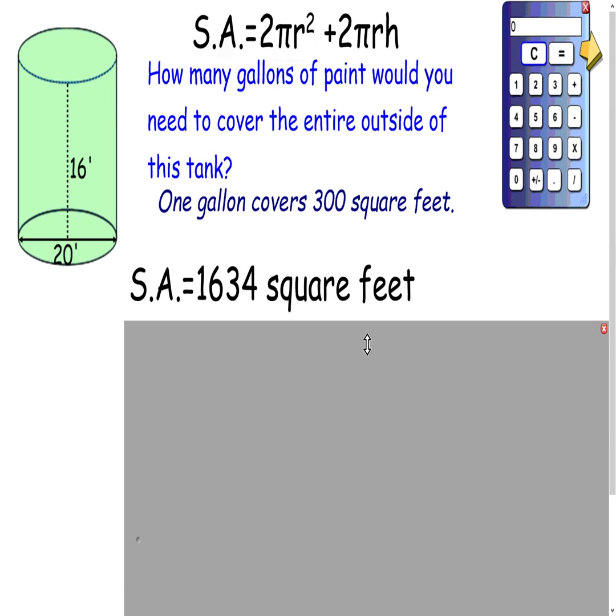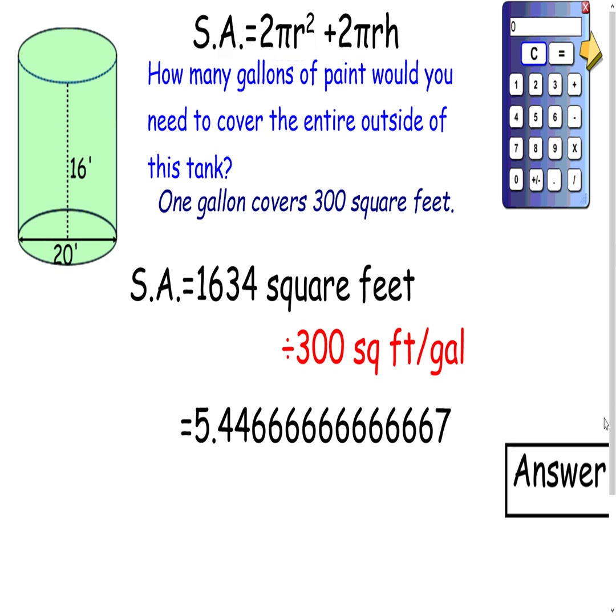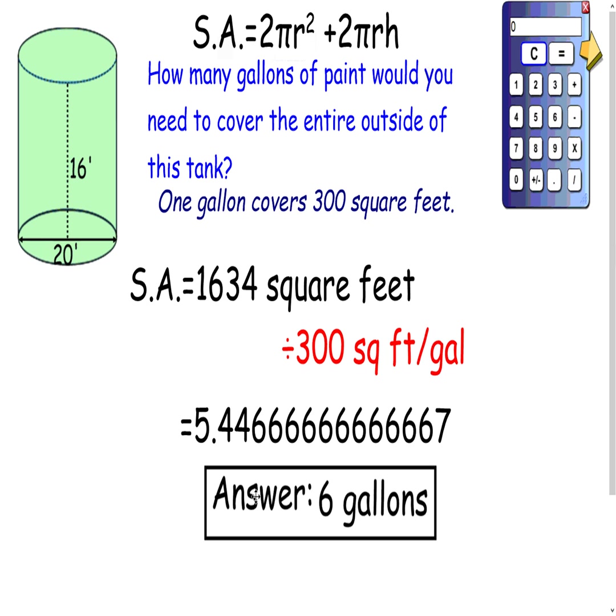So we have our surface area of 1,634 square feet that we calculated in the last problem. We divide it by 300 square feet per gallon, and the square feet are going to cancel out and end up with gallons. And we get an answer of 5.446 repeating gallons, and you can't buy parts of a gallon at the store. So you're going to have to round up and get 6 gallons.